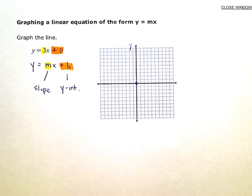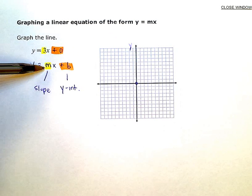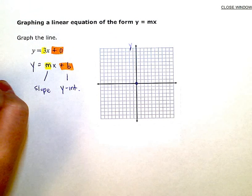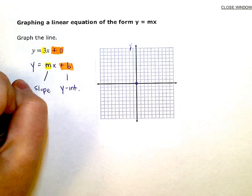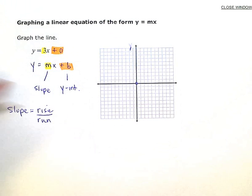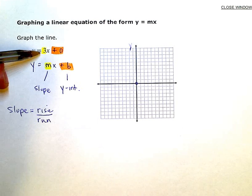So I put a dot right there. And then my slope, my m value, or my slope, is 3. Now, if you remember, slope is equal to rise over run. It's a fraction. I don't have a fraction here. I have just a number 3.